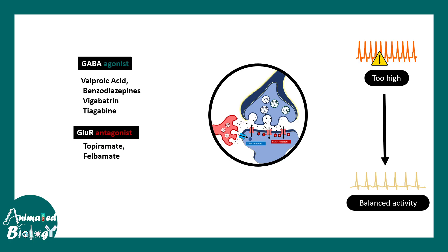Then there are glutamate receptor antagonists, which include topiramate and felbamate. These drugs block the postsynaptic glutamate receptors. Since these receptors correspond to higher or uncontrolled activity, blocking them allows the activity to be controlled and brought back to a baseline level.